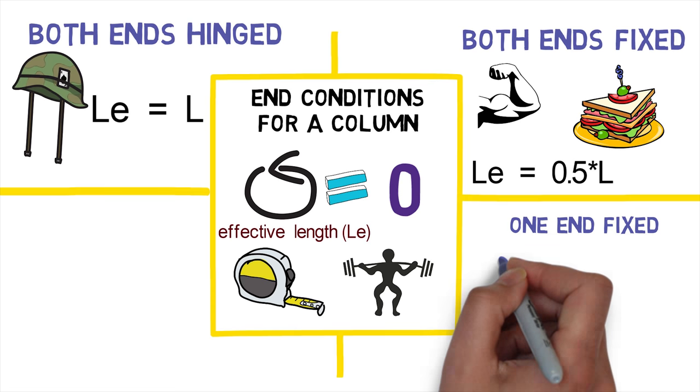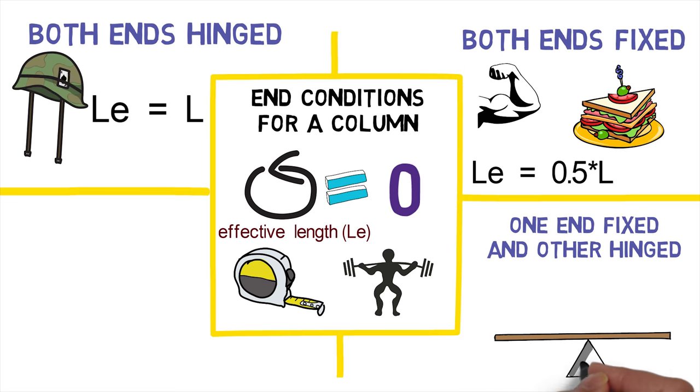Third, one end fixed and other end hinged. In this condition, one end of a column is stronger while the other end is very weak. Equivalent length for this end is 1 upon root 2.